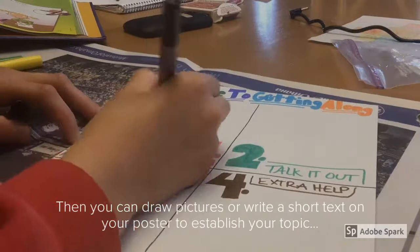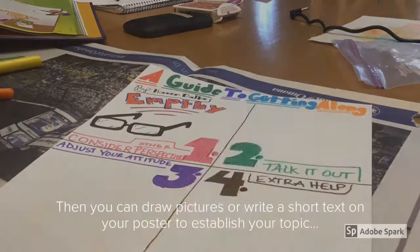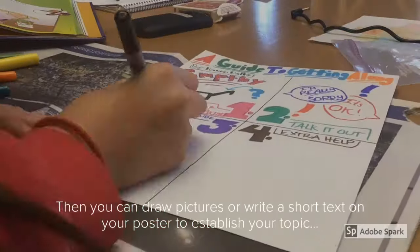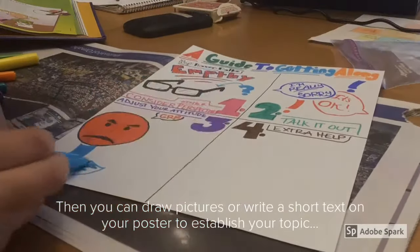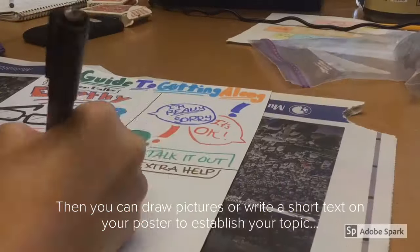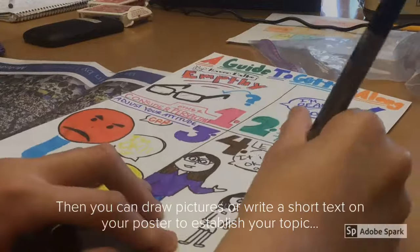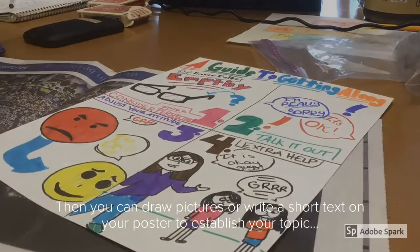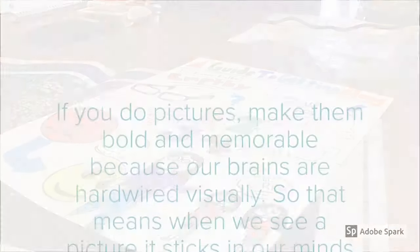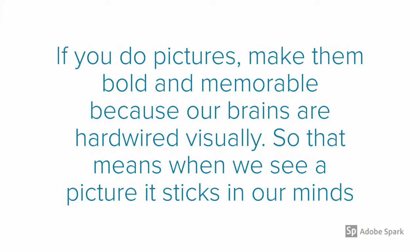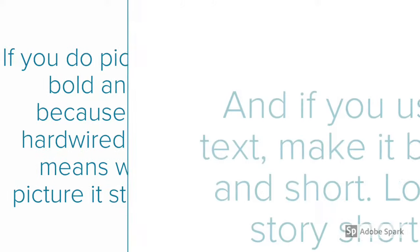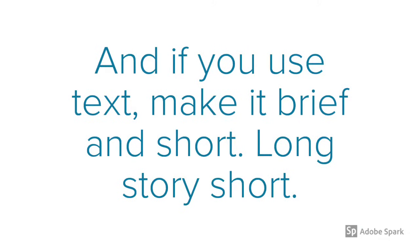Then once you're done with your separating, title, and author, you can draw pictures to make it more clear, or you can write text if you want to be more detailed and straightforward. But make sure if you do pictures, make them bold and memorable, because our brains are hardwired visually — when we see a picture, it sticks in our mind and helps us remember things a lot more. And if you use text, make it brief and short — long story short — and make sure that you don't bore your reader.